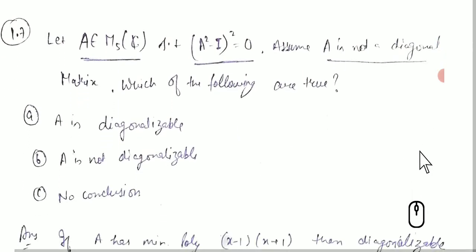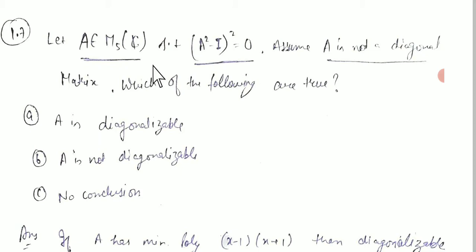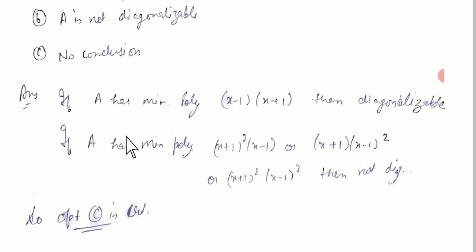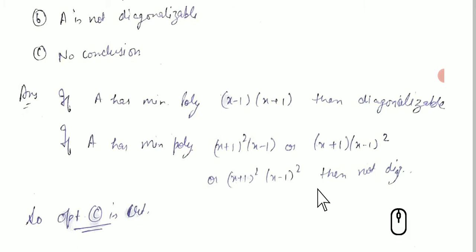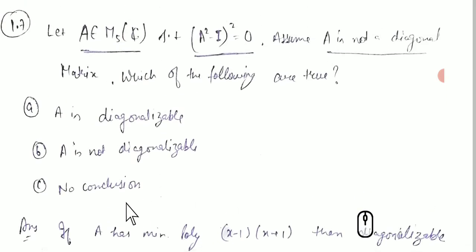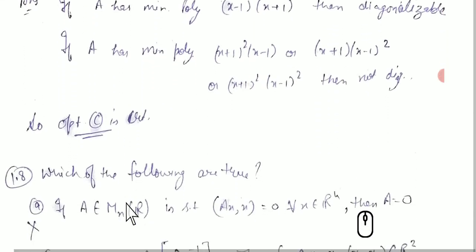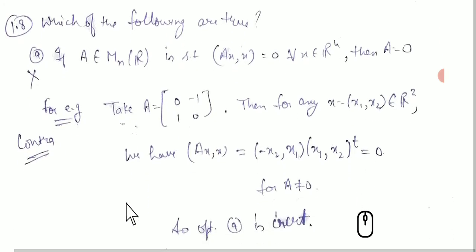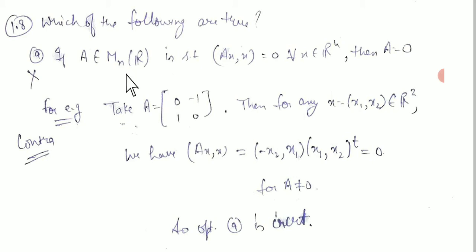Question 1.7: we have a 5×5 matrix A with entries in C such that (A²−I)² = 0. Assuming it is not the identity matrix, we factor this as (A−I)(A+I) applied twice, leading to eigenvalue analysis.